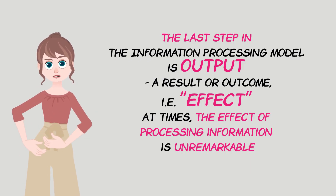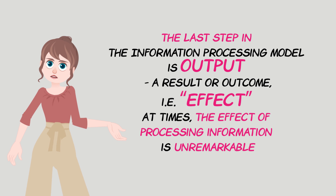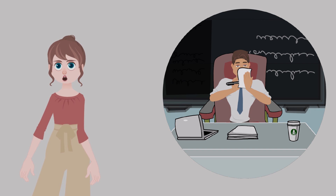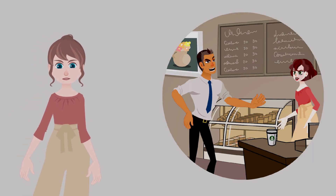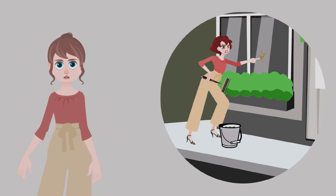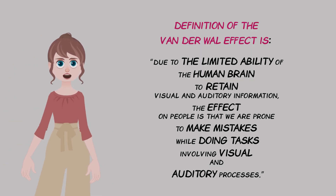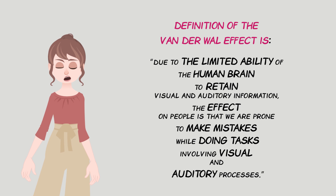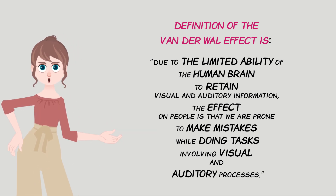The last step in the information processing model is output — a result or outcome. At times, the effect of processing information is unremarkable: we write a paper and catch all of the errors, wash a window and clean all of the smudges, or retain all the content from a short conversation. However, there are many times that we do not find all the errors, clean all the smudges, or remember all the details of a conversation. Hence, the definition of the Vanderwall Effect: due to the limited ability of the human brain to retain visual and auditory information, the effect on people is that we are prone to make mistakes while doing tasks involving visual and auditory processes.